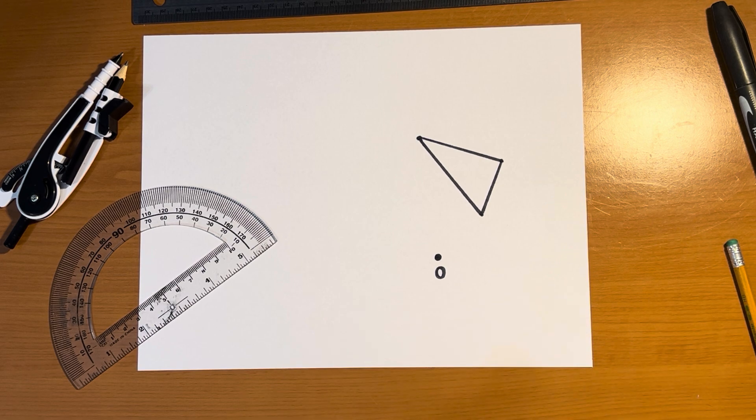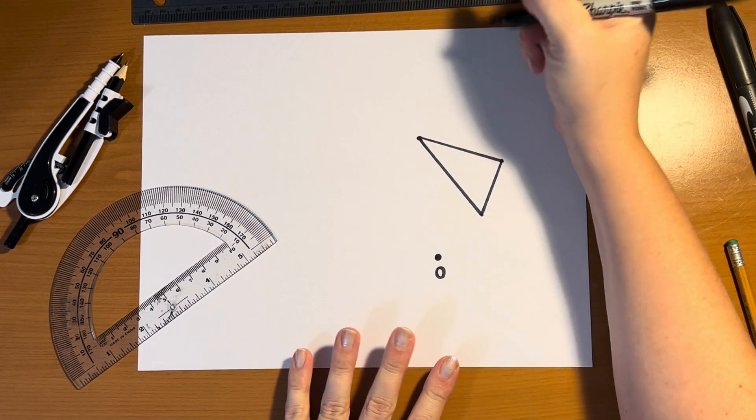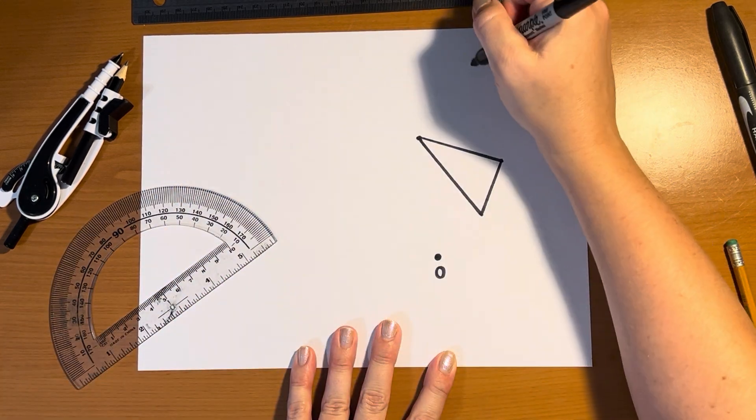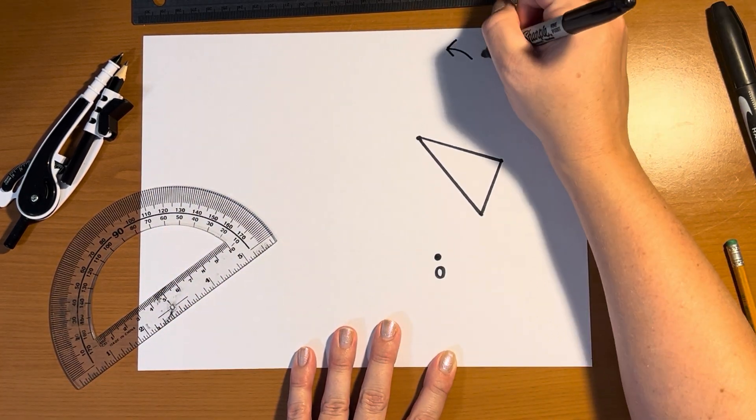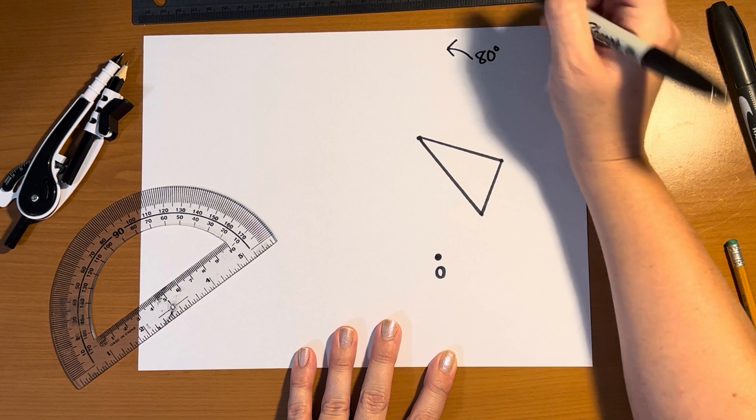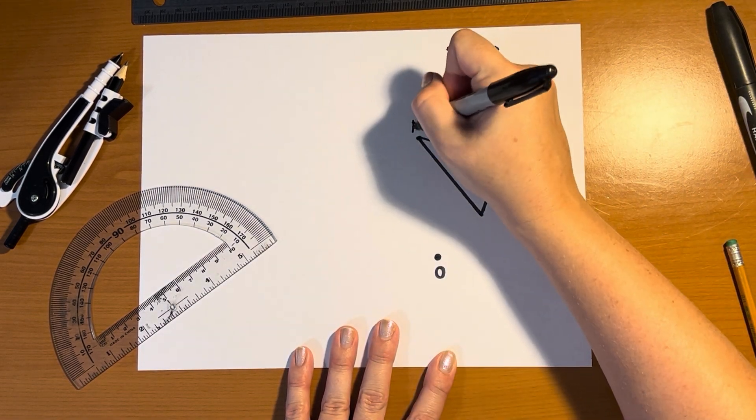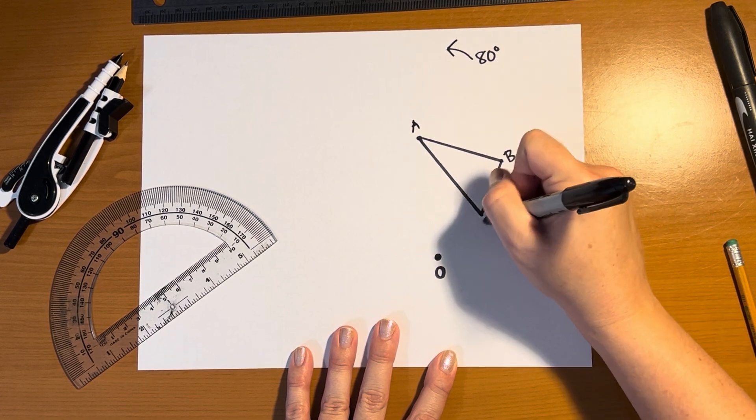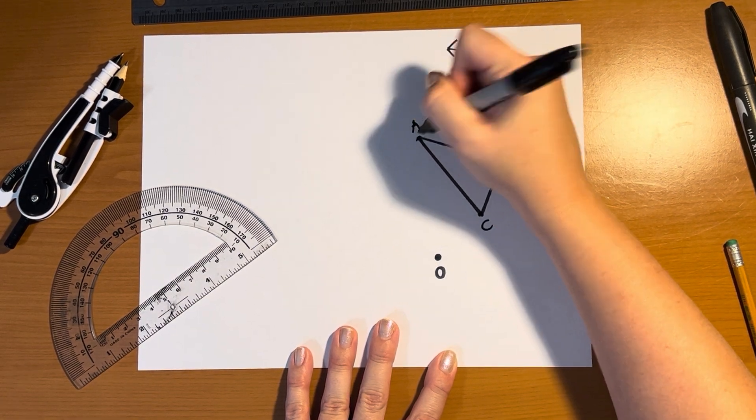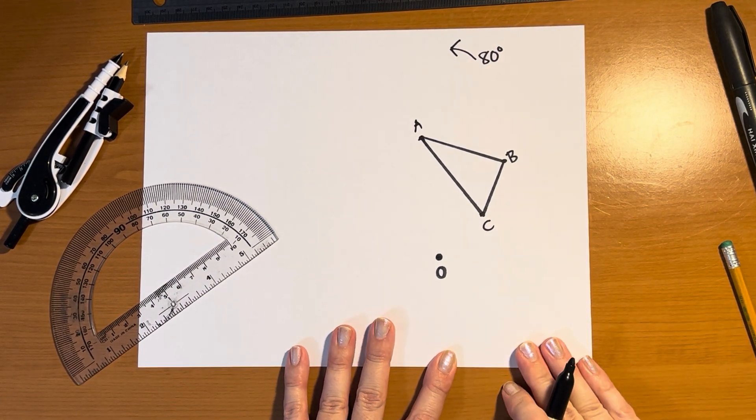So we're going to rotate this triangle around the point O. We're going to go counterclockwise 80 degrees. So the first thing that I'm going to do is label each of the points of the triangle. It tends to make it just easier to talk about what's happening.